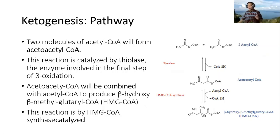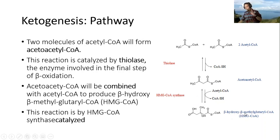Now let's see the pathway of ketogenesis. Two molecules of acetyl-CoA will form acetoacetyl-CoA; this reaction is catalyzed by thiolase, the enzyme involved in the final step of beta oxidation. Acetoacetyl-CoA will then be combined with another acetyl-CoA to produce beta-hydroxy-beta-methylglutaryl-CoA, which we call HMG-CoA, and this reaction is catalyzed by HMG-CoA synthase.